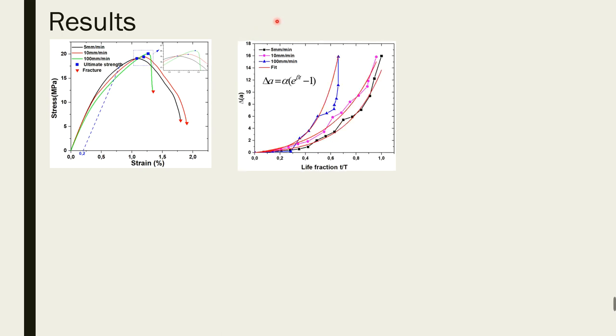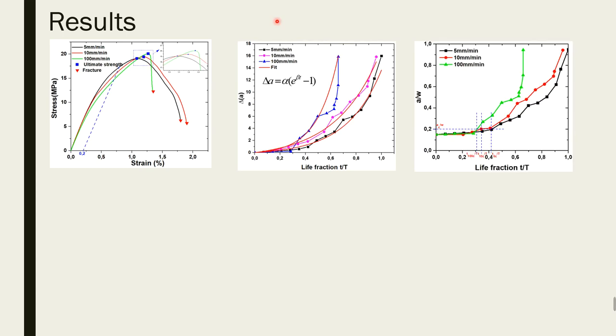Further, the critical crack length is approximately constant and equal to 0.2 of the sample width at all crosshead speeds. Nevertheless, the sample quickly exceeds this critical value as the crosshead speed is increased, showing that crosshead speed has effects on life fraction of the material.